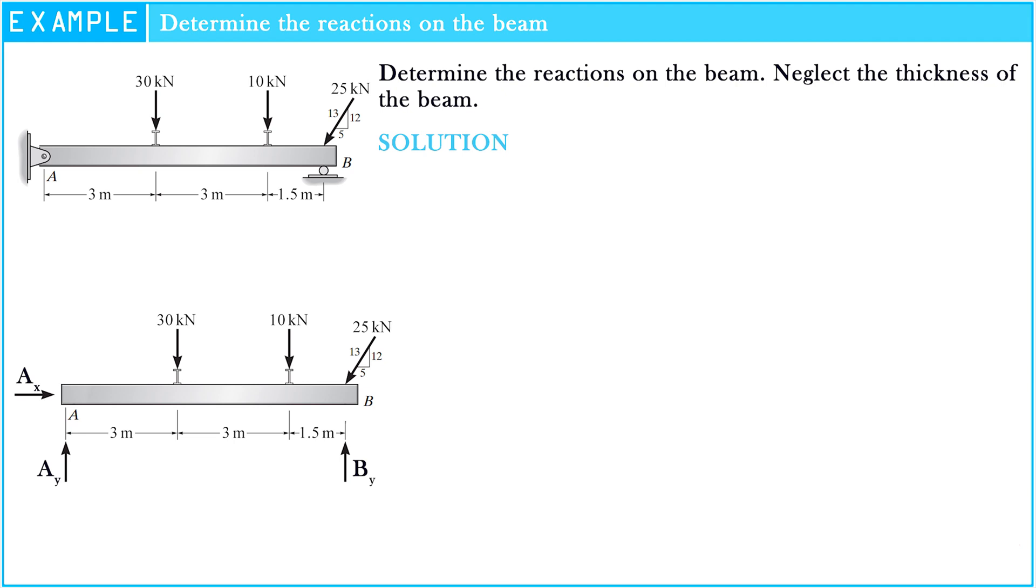At point B, we see that it is a roller support, which has one unknown: BY. So let's apply directly by writing the moment equations of equilibrium about A and B respectively.